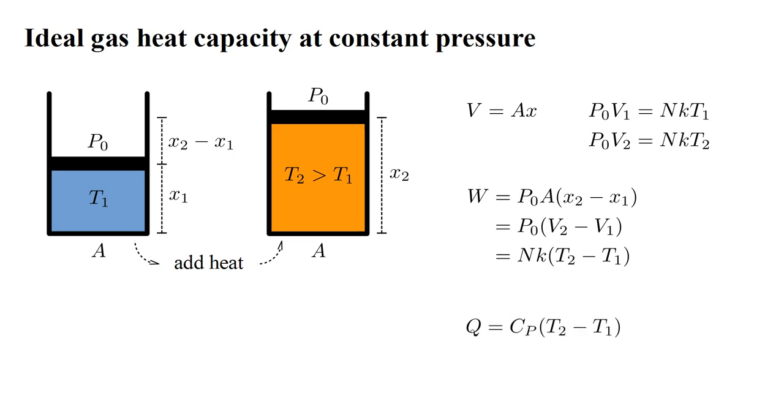The heat capacity at constant pressure, C_P, is defined by added heat Q equals C_P times temperature change, T2 minus T1. This does not equal the heat we would need to add to the gas at constant volume to get the same temperature increase, C_V times temperature change, where C_V is the heat capacity at constant volume. For the constant volume case, all added heat goes into increasing the internal energy, hence the temperature of the gas. For the constant pressure case, we need to add the additional heat that gets converted into work, NK times the temperature change.